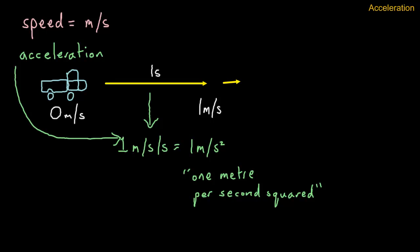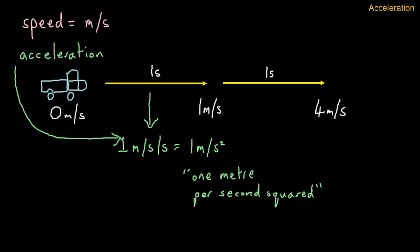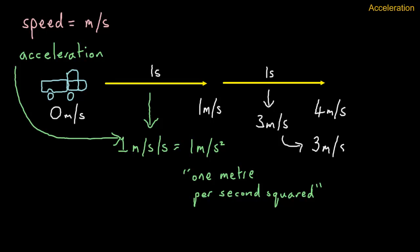Let's take a look at the next second. In this case, the speed is one meter per second when we start, and one second later we've got a speed of four meters per second. So how much quicker are we? In this second we got quicker by three meters per second every second, so the acceleration in this case will be three meters per second squared. And that's a quick look at acceleration.